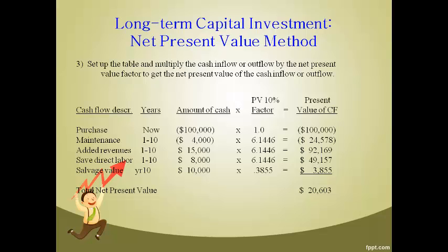Find the present value factor in the present value table for 10% in 10 years, and multiply these present value factors by the amount to get the present value for each cash flow. Present value is the equivalent today in today's dollars. Net all of the cash flows to get the net present value.